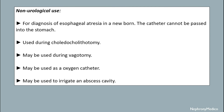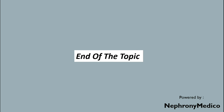Non-urological uses include: for diagnosis of esophageal atresia in a newborn, where the catheter can be passed into the stomach; it may be used during choledocholithotomy; it may be used during vagotomy; it may be used as an oxygen catheter; and it may be used to irrigate an abscess cavity. End of the topic.